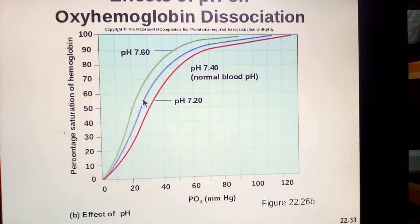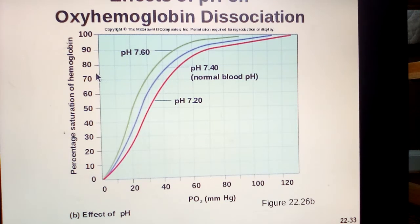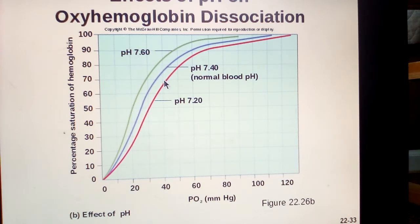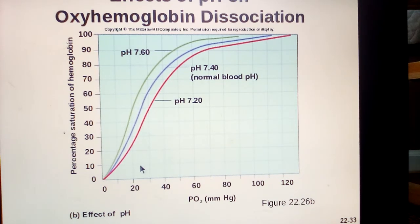This is called the Bohr effect — the effect of pH on hemoglobin saturation. The blue line is normal blood pH. But if you acidify it — metabolism tends to acidify the blood — the hemoglobin will automatically release more oxygen. At a PO2 of 40 with normal blood, it's about 75% saturated and has unloaded 25%. If you keep everything the same but drop the pH, make it more acidic, now we're down to about 65% saturated — the blood is unloading 10% more of its oxygen, even though the PO2 is the same, because we dropped the pH. You can show the same thing for CO2 and any other variables associated with metabolism — they all tend to favor unloading and right-shift the saturation curve.